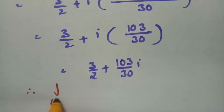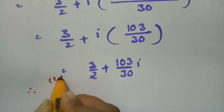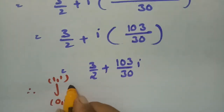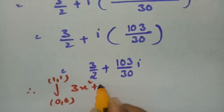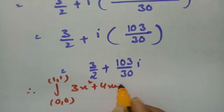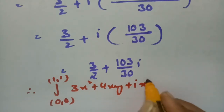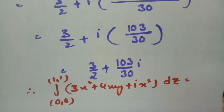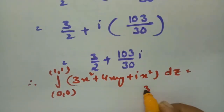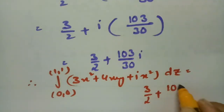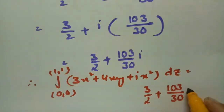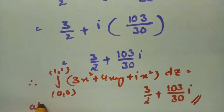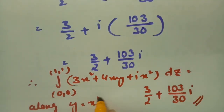Therefore, the integral from (0,0) to (1,1) of 3x² + 4xy + i·x² dz is equal to 3/2 + (103/30)i, along the curve y = x².